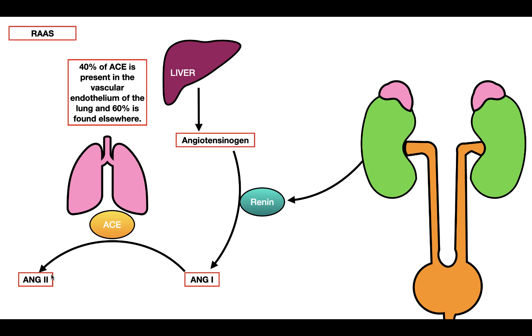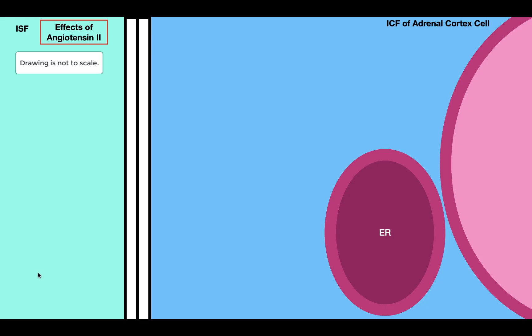Now that we know how angiotensin 2 is formed, what are its effects on the adrenal cortex? This diagram shows a cell of the adrenal cortex in the zona glomerulosa. On one side we have the interstitial fluid bathing the cell, and on the opposite side we have the cytoplasm. Separating these two fluid compartments is the plasma membrane. Inside the cell we have the endoplasmic reticulum as well as the mitochondria, though these drawings are not to scale.